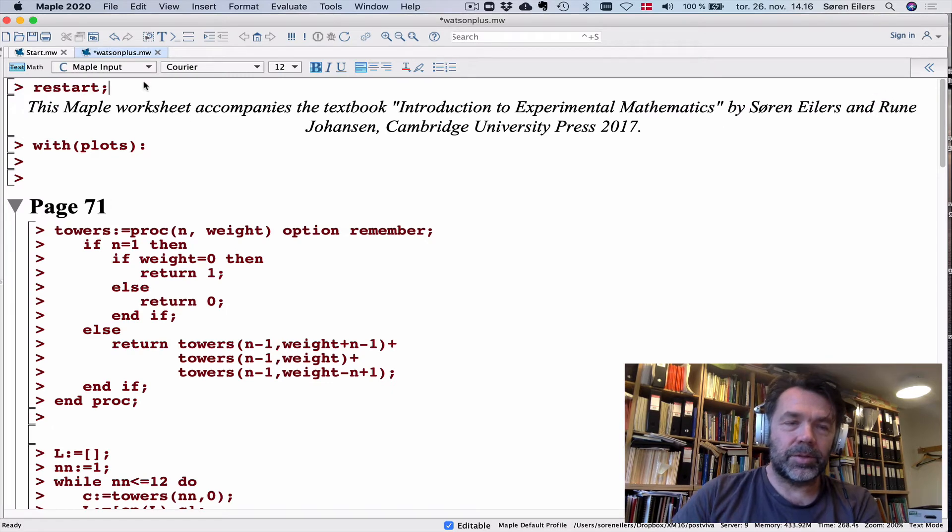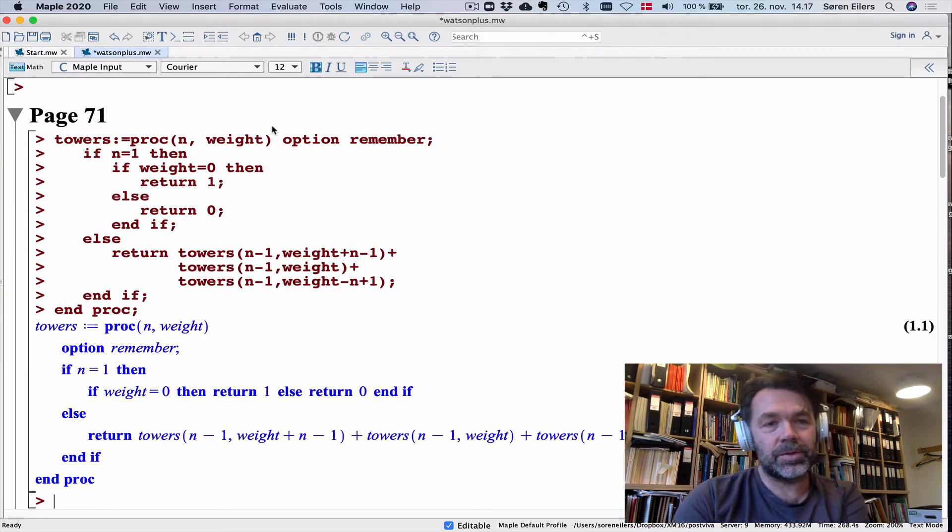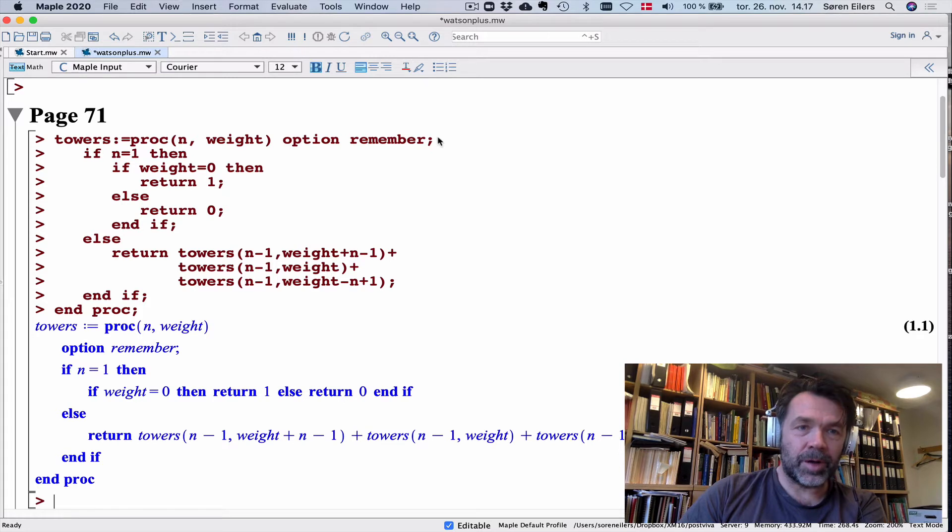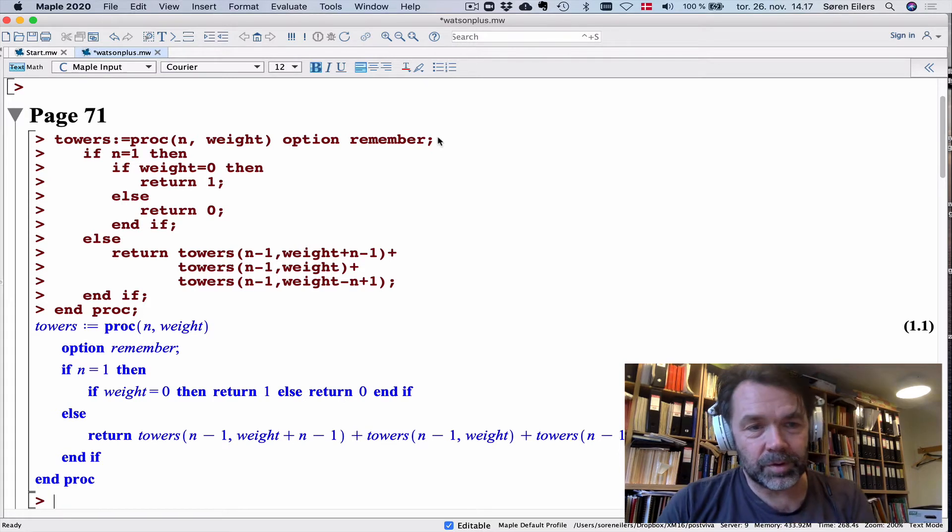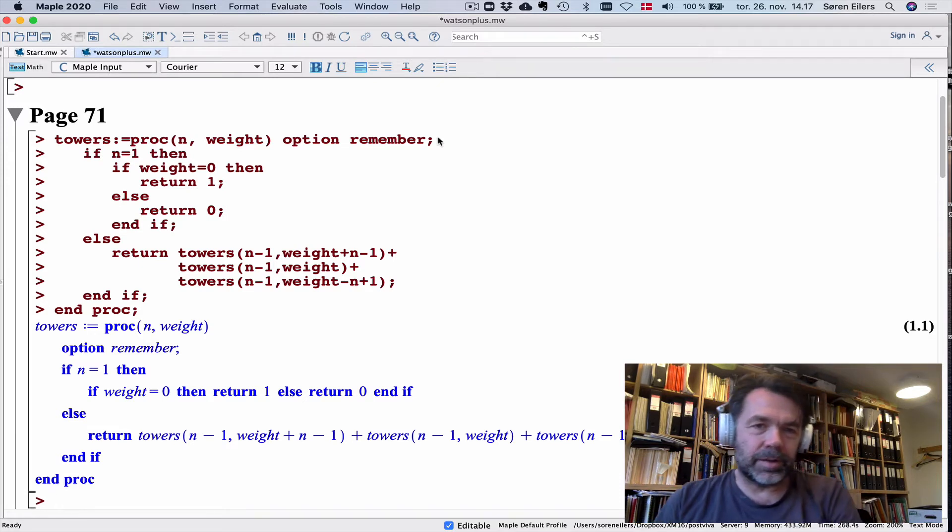Let's do a little bit of this in Maple. All this is carefully written out in the book. I would like to compute these numbers by a recursive function. This function has a remember option, and this is going to be very important for the runtimes. If I was to delete this, I could still get a little further than Watson, but not very much.